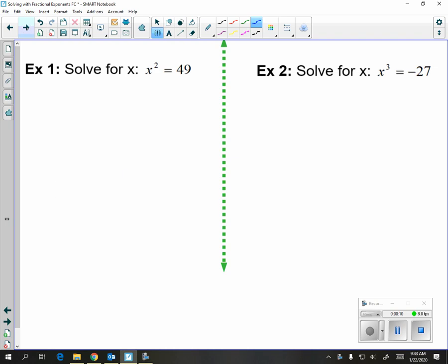We're used to solving them by, let's see, we have x squared equals 49, so usually we would take the square root of both sides, and we would get that x is equal to plus or minus 7. And on the left, if we have x cubed equals negative 27, we're used to taking the cubed root of both of them, in which you would get x equals negative 3.